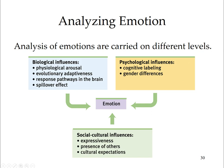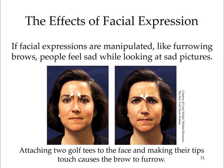The facial feedback hypothesis proposes that expressions amplify our emotions by activating muscles associated with specific states — the muscles signal the body to respond as though experiencing those states. Students induced to frown reported feeling a little angry; students induced to smile felt happier and found cartoons funnier. Similarly, the behavior feedback hypothesis assumes that if we move our body as we would when experiencing some emotion — such as shuffling with downcast eyes as when sad — we are likely to feel that emotion to some degree. When facial expressions are manipulated, such as making two golf tees attached to the face touch to furrow the brow, people feel sad while looking at sad pictures.